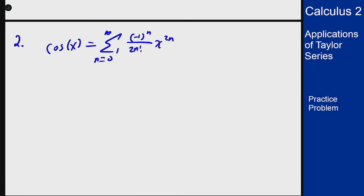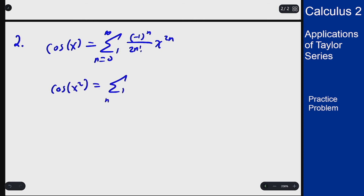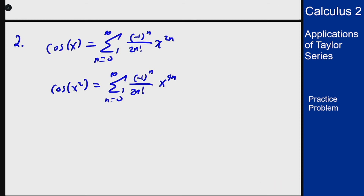If I substitute x² for x, then cos(x²) is the sum from n=0 to infinity of (-1)ⁿ / (2n)! · x^(4n), because substituting x² gives an exponent of 4n.